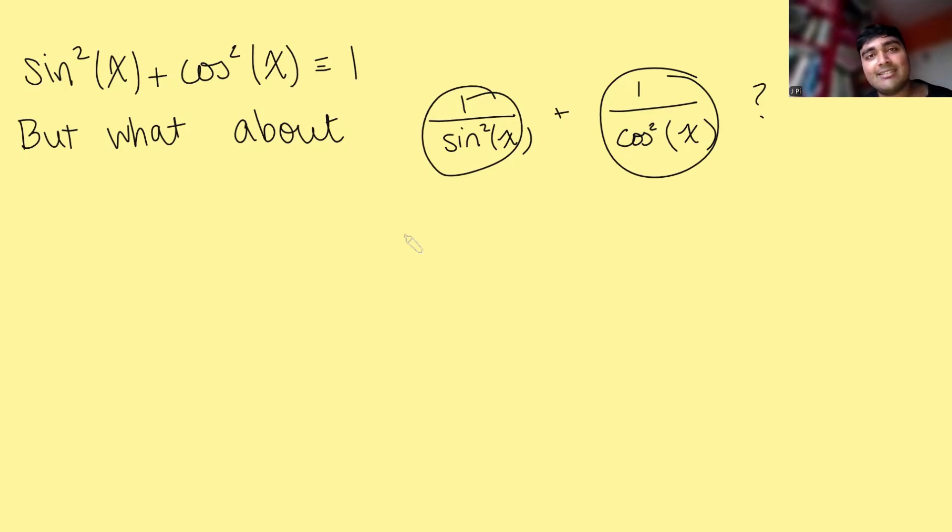But who says x has to be real? x could potentially be a complex number. So to make that a bit clearer, let's use z here instead of x. Now, this becomes a more interesting question. How can we find a complex number z such that 1 over sine squared z plus 1 over cos squared z is 1? The answer is yes. Let's see why.